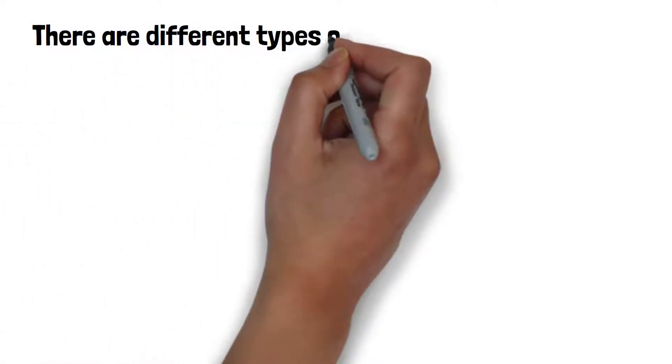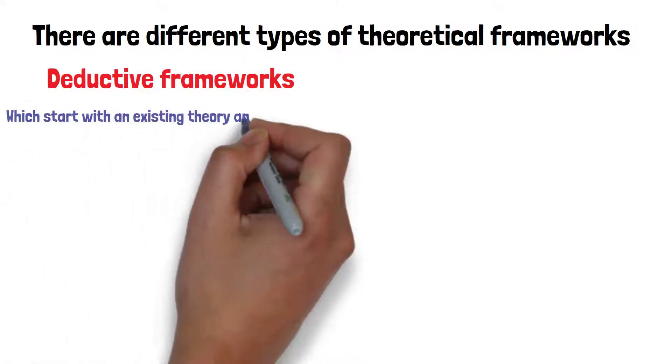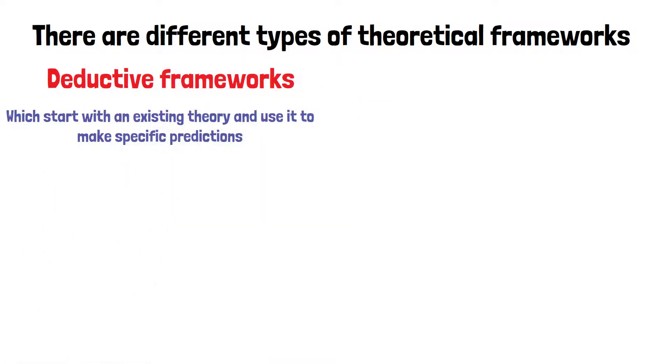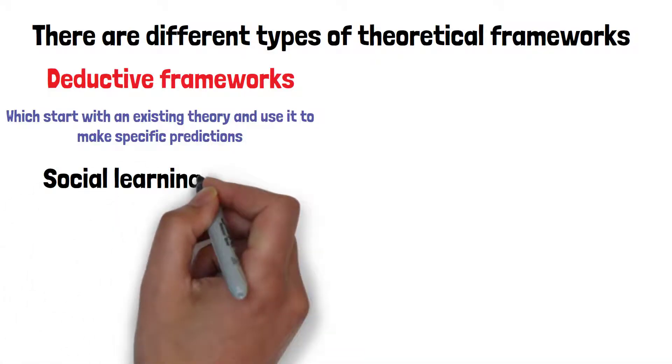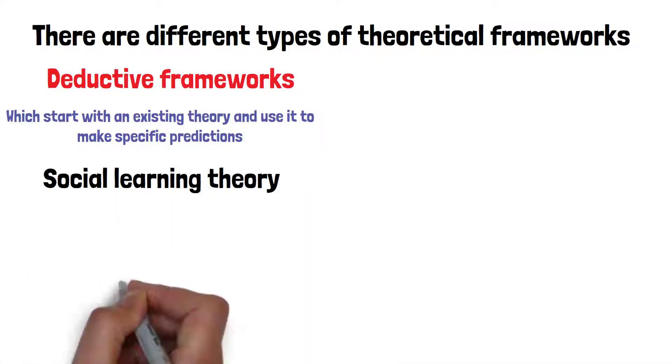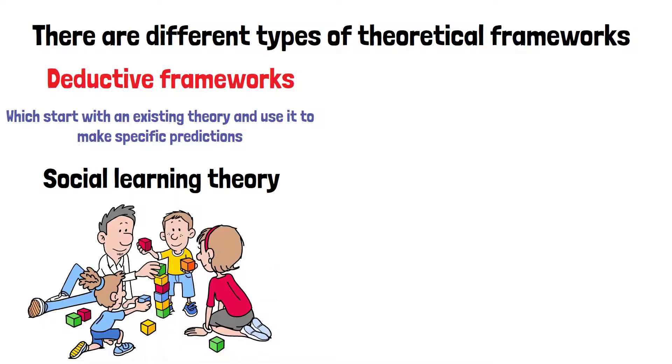There are different types of theoretical frameworks. One type is deductive frameworks, which start with an existing theory and use it to make specific predictions. For example, using social learning theory, a researcher might predict that children learn behaviour by watching others.